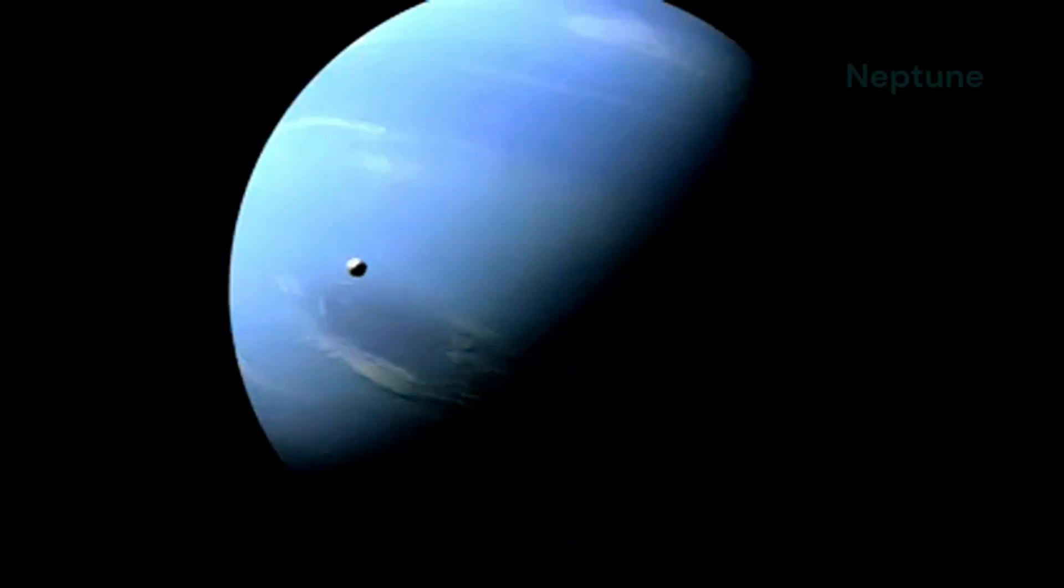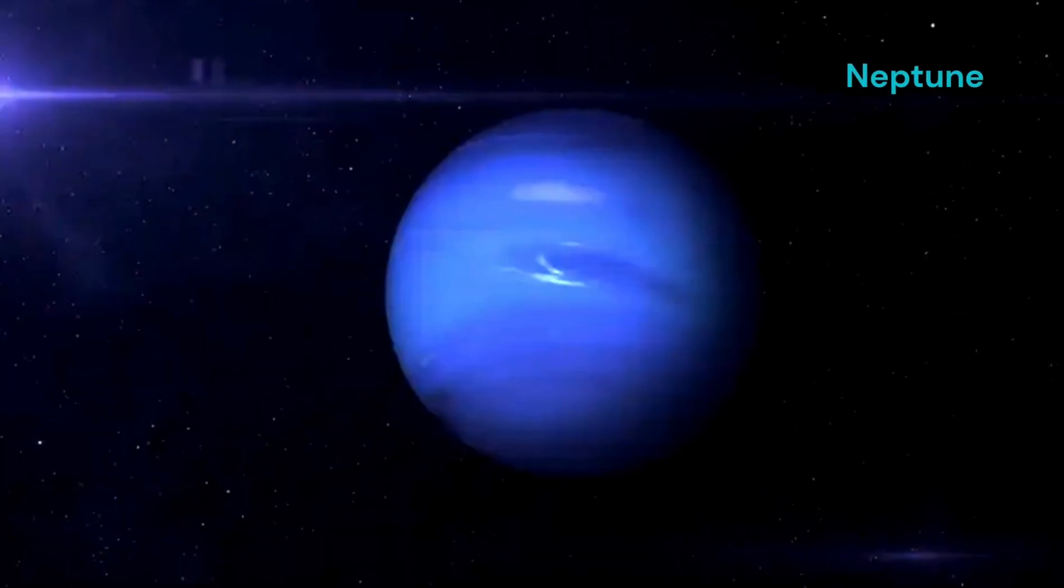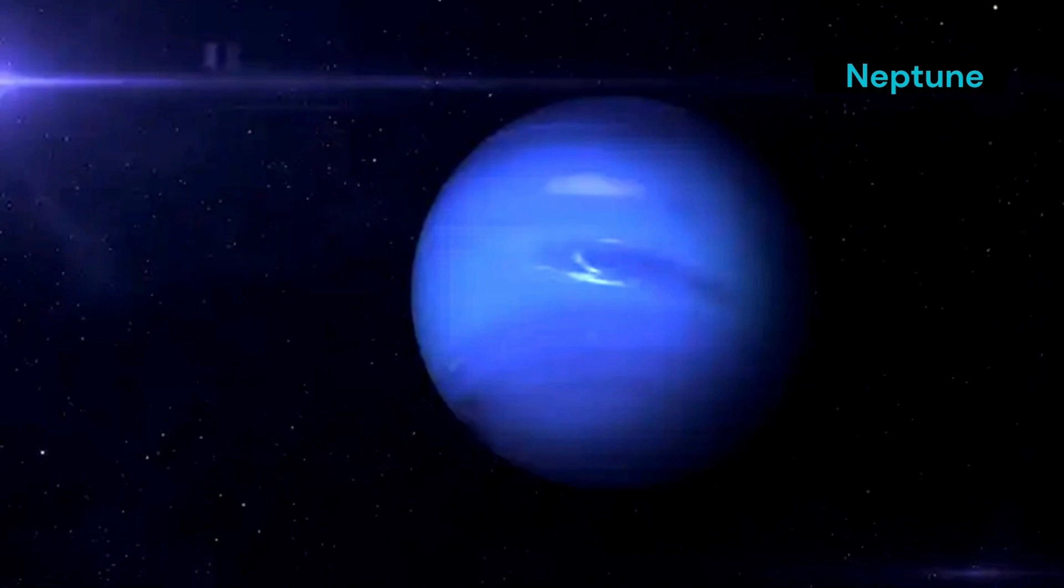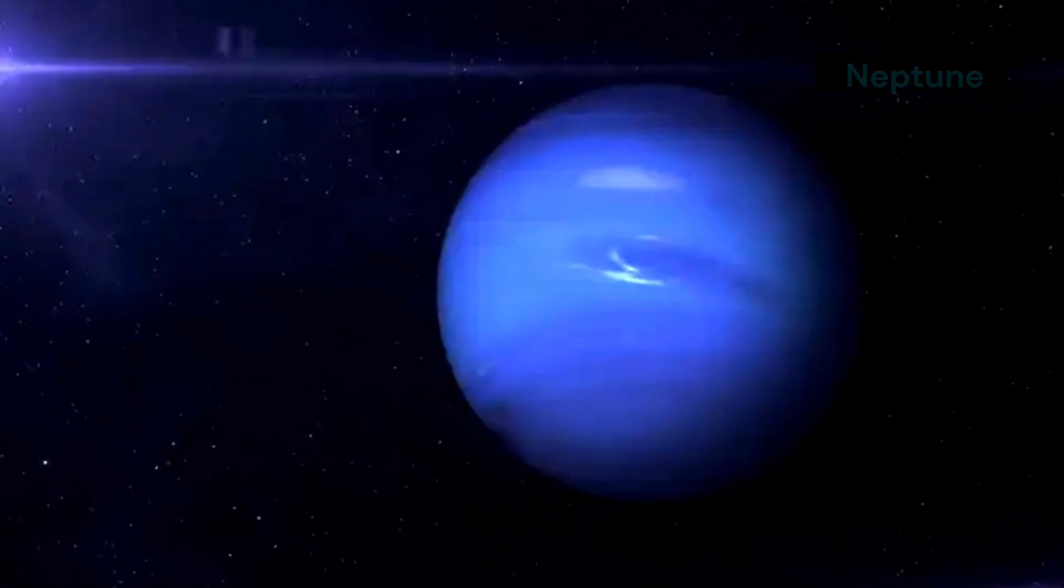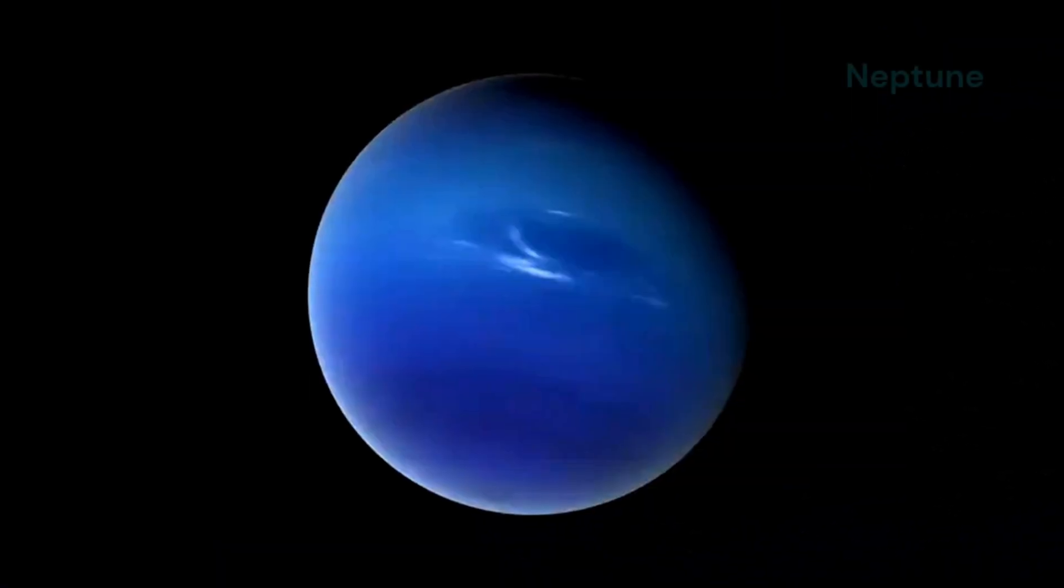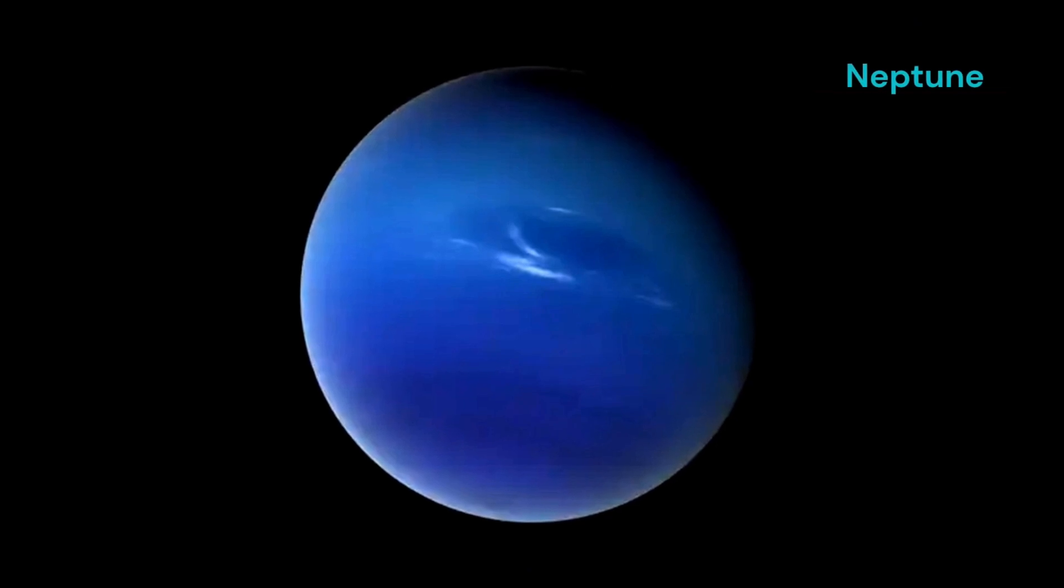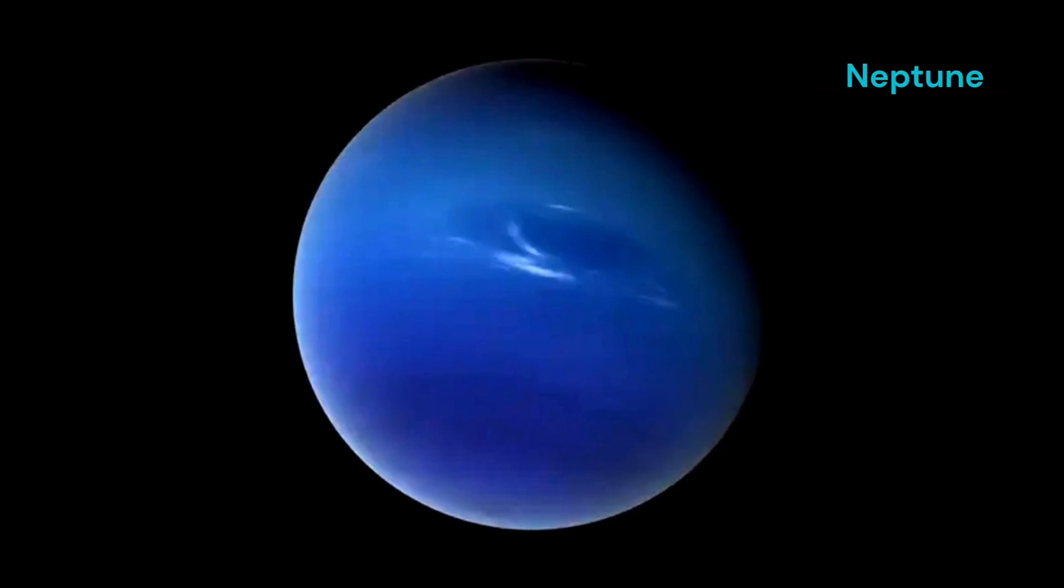It is a ball of gas and ice with a swirling blue atmosphere. This atmosphere is composed mainly of hydrogen, helium, and methane, giving Neptune its distinctive blue color. The blue color comes from methane, which absorbs red light and reflects blue light. This methane is present in the upper layers of Neptune's atmosphere, creating a vivid blue hue that is unique among the planets.